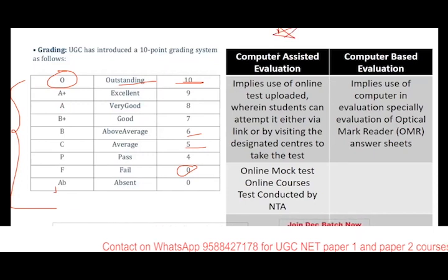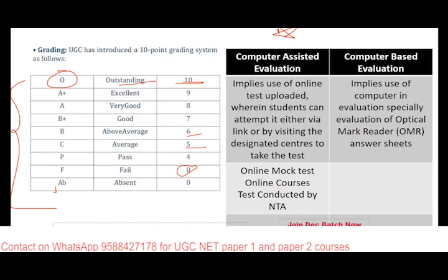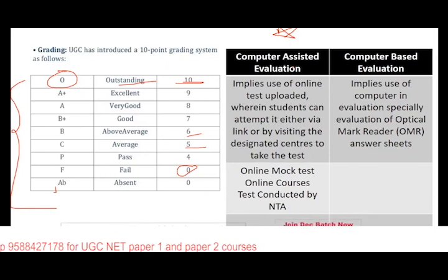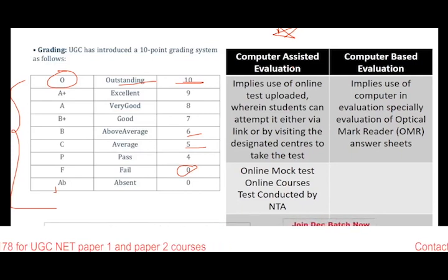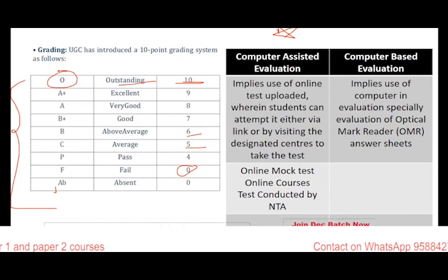Computer assisted evaluation means online examination with a link given to students — NTA UGC NET conducts this online examination at specific centers. Computer-based evaluation is where evaluation happens with the help of OMR sheets — optical mark read answer sheets — which is technology-based, and your sheets are assessed and evaluated using this technology.